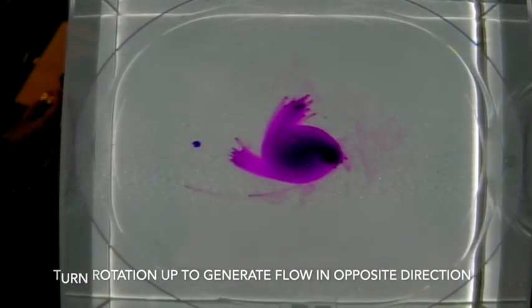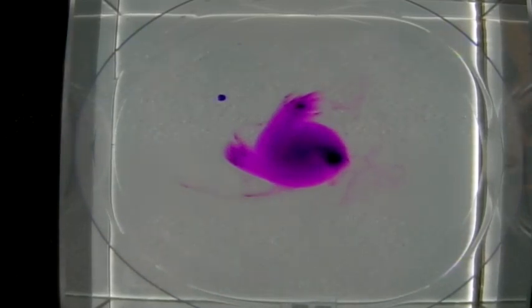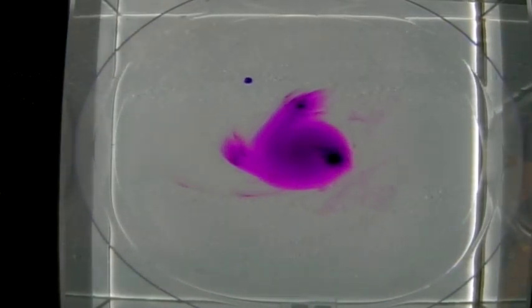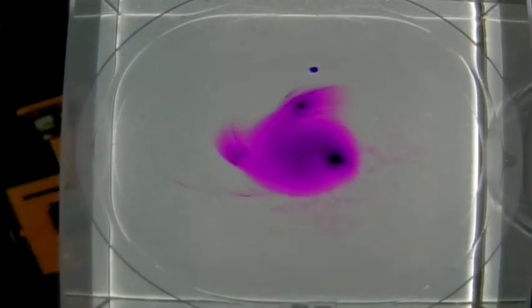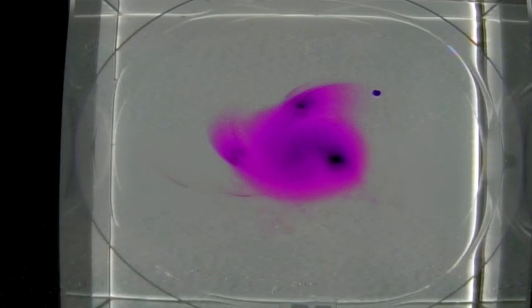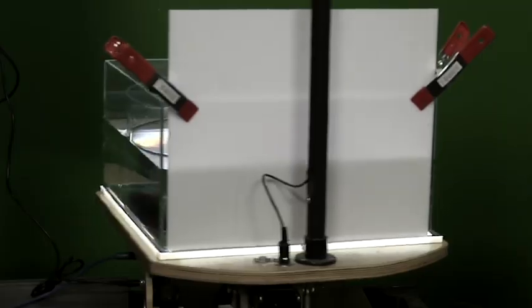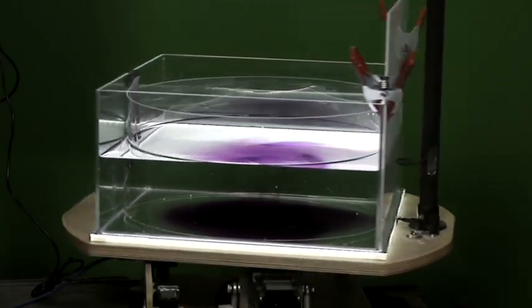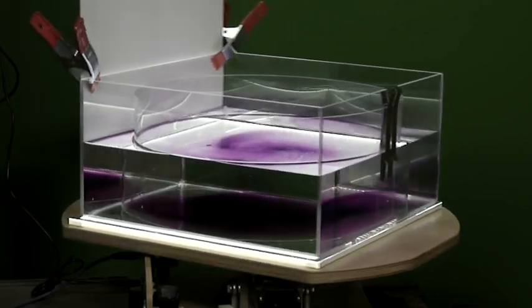We can also then turn the rotation rate back up to generate a flow in the opposite direction, which will be clockwise in this case, which is anticyclonic flow associated with a high pressure at the center of the tank. And so we see our paper dot in an axisymmetric clockwise pattern of rotation, whereas the potassium permanganate at the surface is beginning to move outwards from the center as well as spiral around anticyclonically.